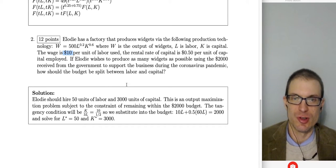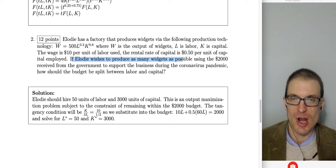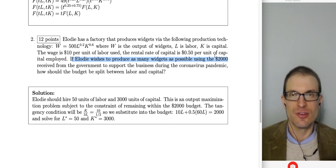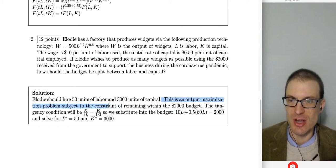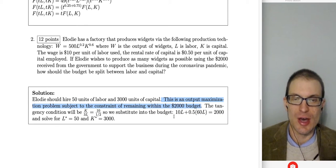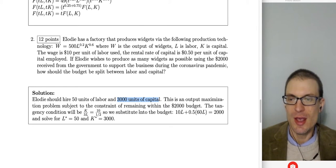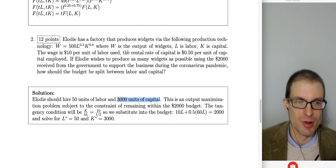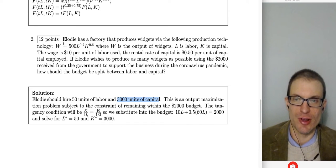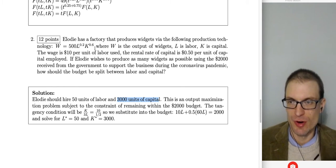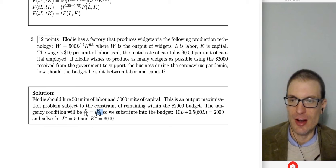We have to think about this question — we want to produce as much output as possible with $2,000, so this is an output maximization problem subject to the $2,000 budget constraint. Setting up the tangency condition via the Lagrangian, the marginal rate of technical substitution equals the ratio of factor prices. The MRTS gives us K over 3L, and the factor price ratio W over R is 10 over 0.5.